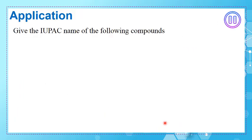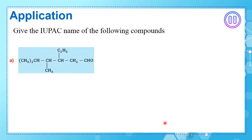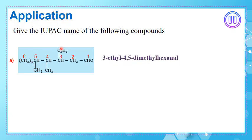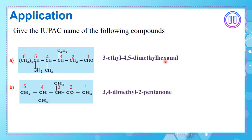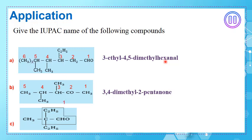Let's do some application. Give the IUPAC name of the following compound — pause and try it yourself. The solution: start numbering from carbon 1, 2, 3, 4, and on carbon 5 note two methylene groups attached. The name is 3-ethyl-4,5-dimethylhexanal. Here are two more examples — pause and solve each before checking the solutions provided.